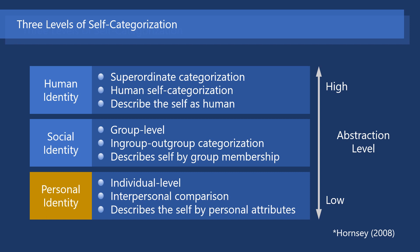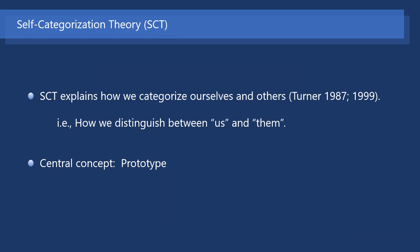Personal identity is the personal self-categorization based on interpersonal comparison. Personal identity describes the self by personal attributes. It is an individual level categorization and the lowest abstraction level. Social identity is in-group/out-group categorization. Social identity describes the self by group membership. It is a group level categorization with an intermediate level of abstraction. Human identity is a superordinate categorization with the highest level of abstraction, categorizing the self as human. Self-categorization theory explains how we form perceived in-groups and out-groups — that is, how we distinguish between us and them.